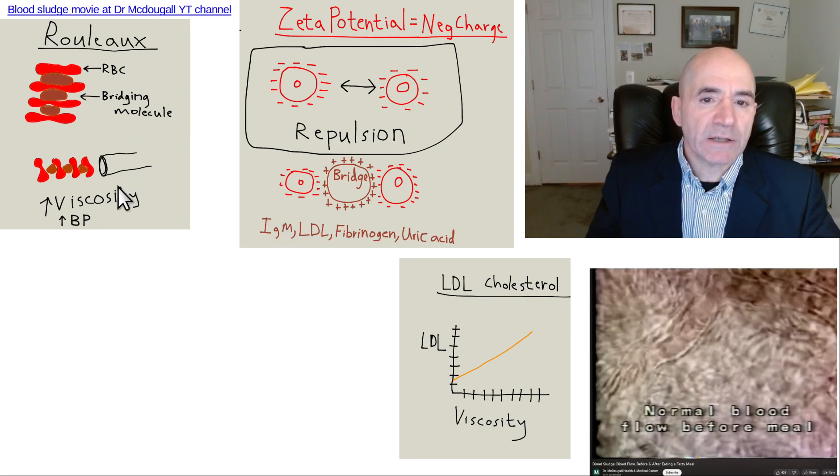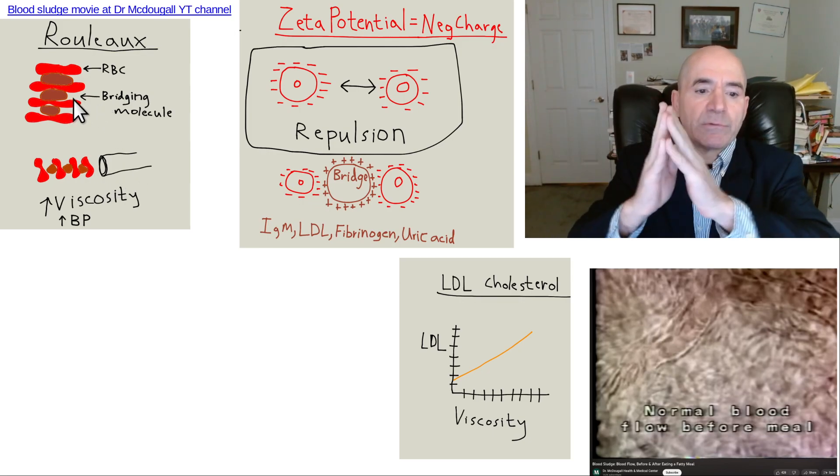Basically, you've got red blood cells. Normally, they're about 7 microns in diameter. Capillary is about 5 microns. They have to deform to fit through the capillary. When there's a bridging molecule, something that sticks the red blood cells together.